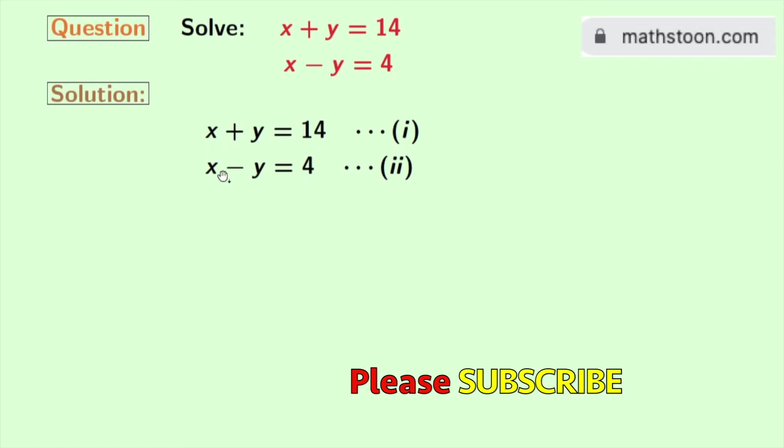Now we will add these two equations. Doing so, we get x and x which is 2x. There is plus y and minus y which is 0, so we have nothing in this place.